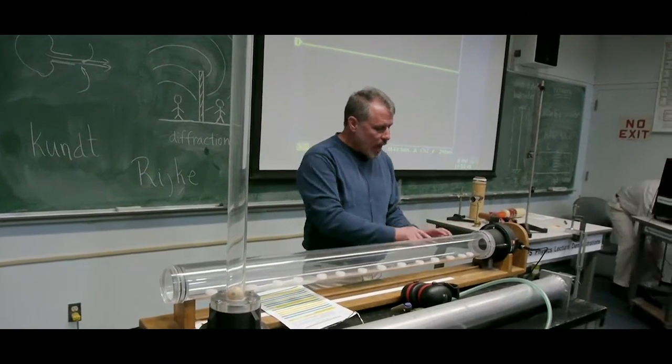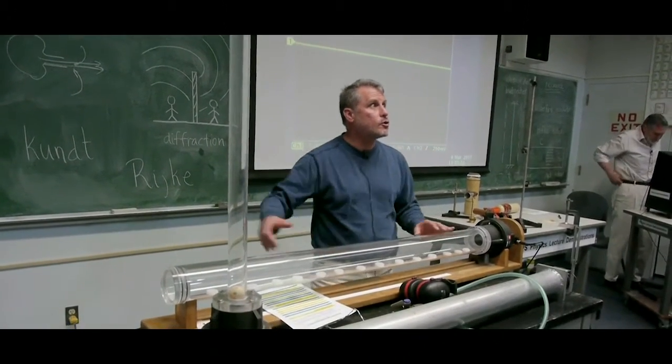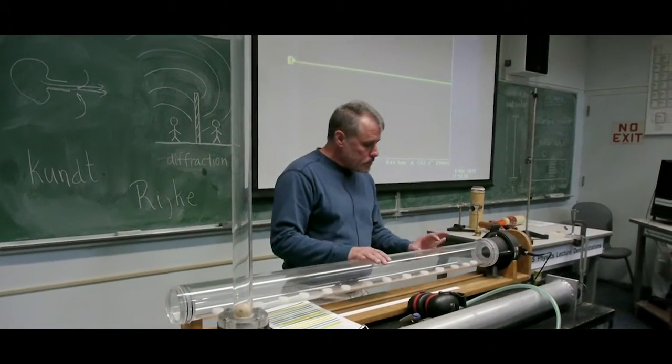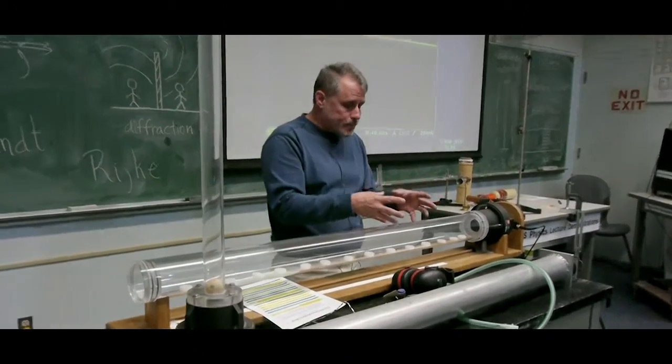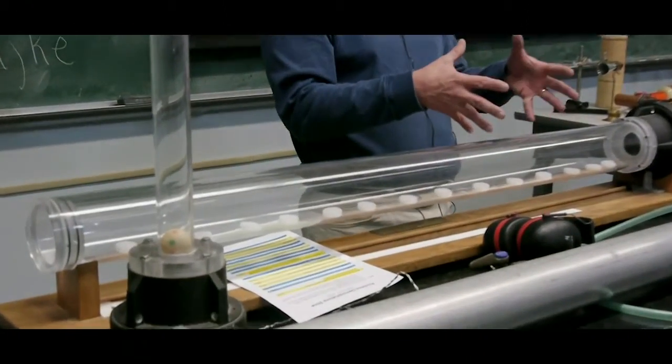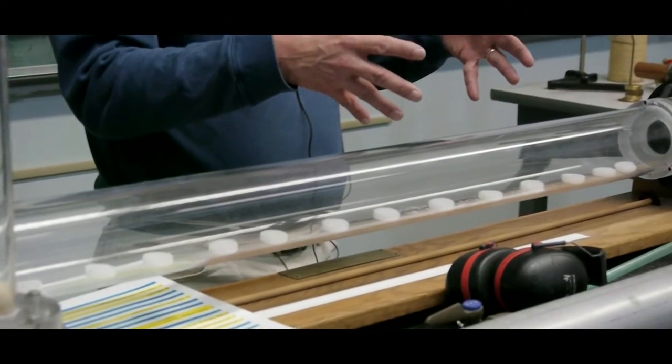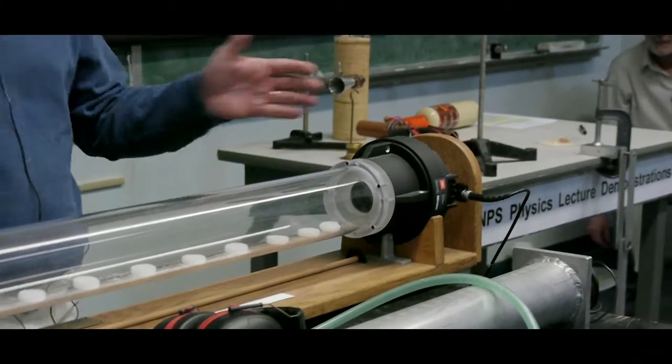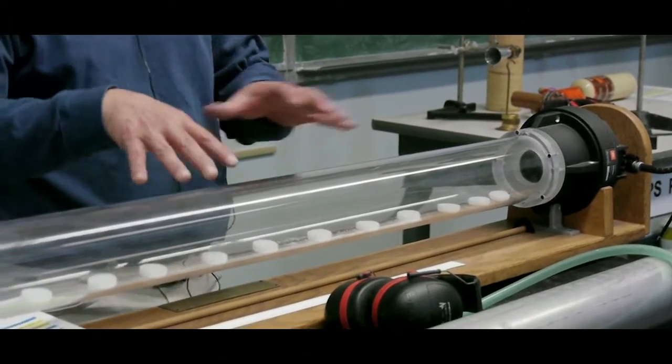Now I have in this tube, which is called a Kuhn's tube, after this guy, I have these light styrofoam discs and the discs are actually gonna go to the regions of low pressure, high particle velocity, where the gas is moving very fast. That's where these guys are gonna agglomerate.